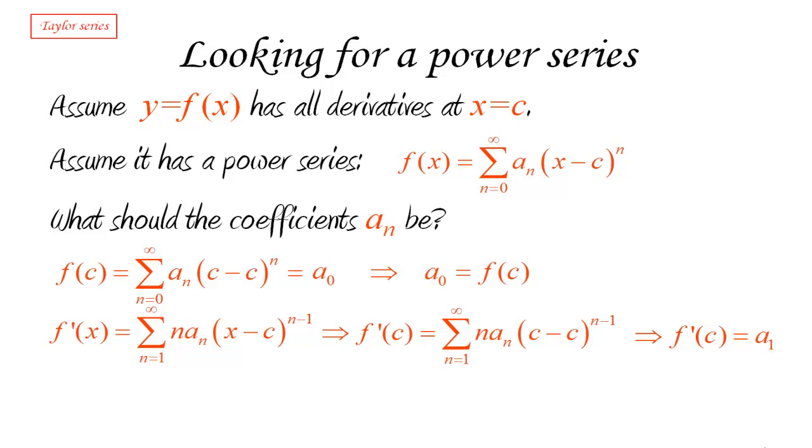Alright, so the first term a_0 is the value of the function at c. The next coefficient a_1 is the value of the derivative at c. Could it be that these coefficients are just the values of the derivative at all these numbers? Well, let's not draw conclusions too hastily. After all, we've just checked the first two. Maybe this is just a coincidence for the first two terms and it's not going to continue.